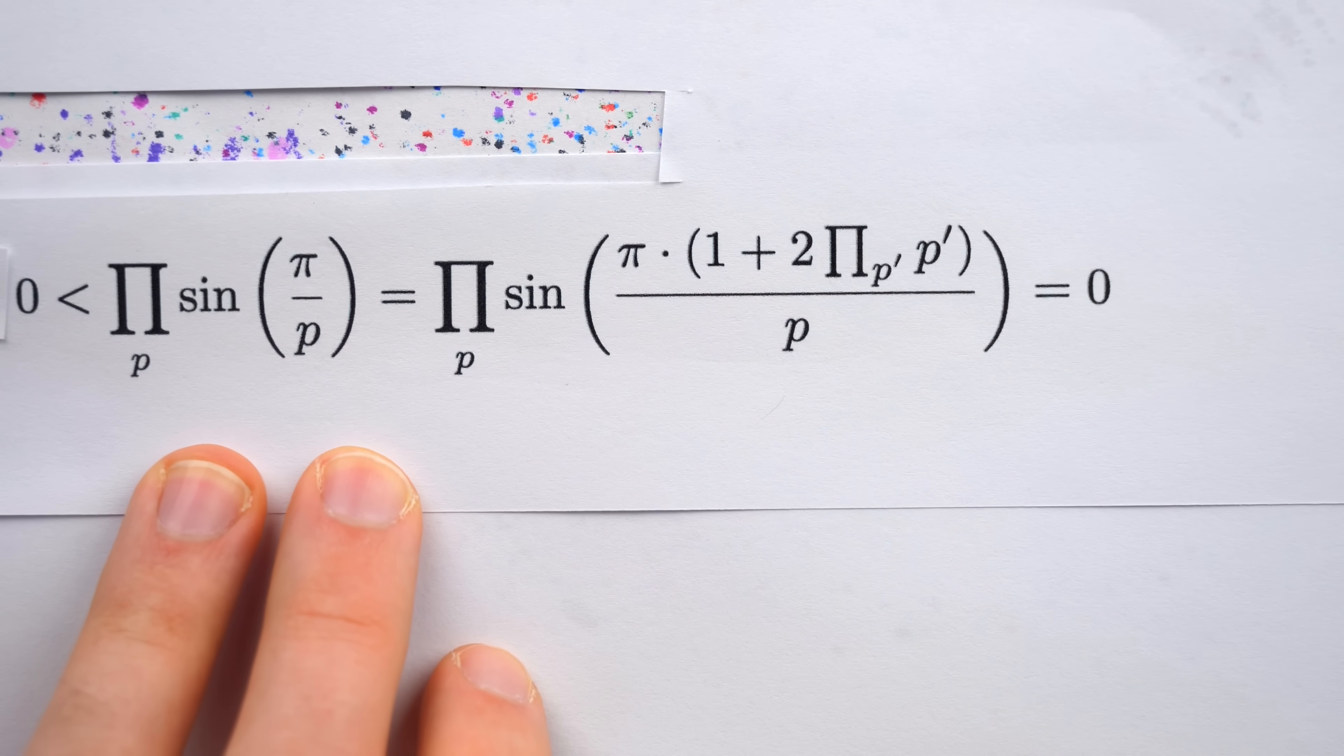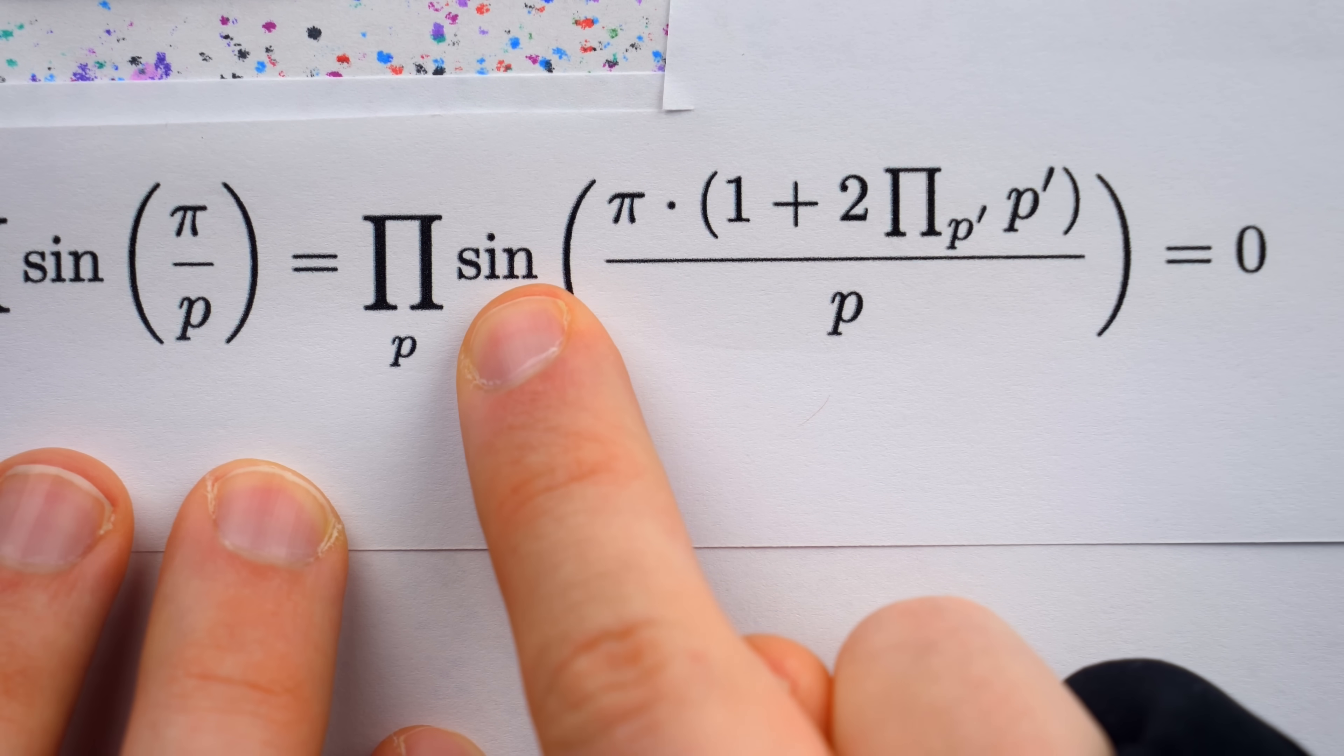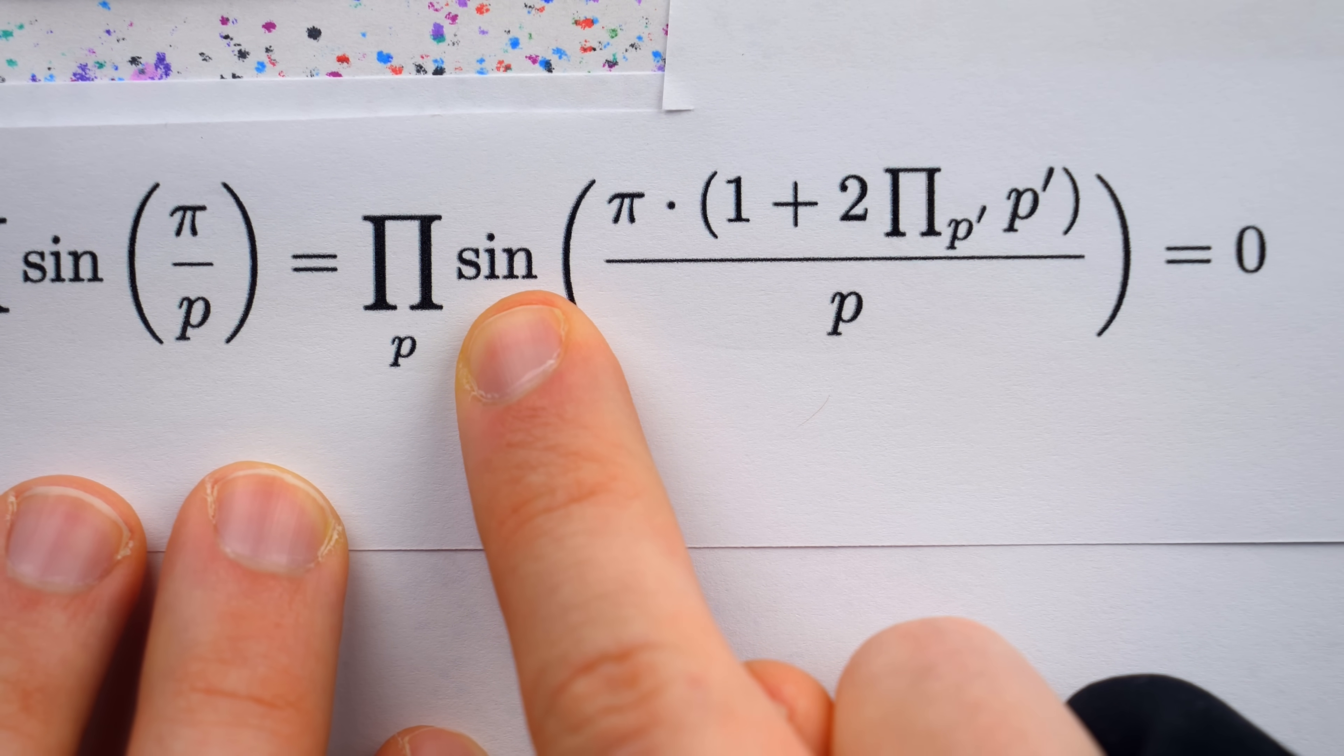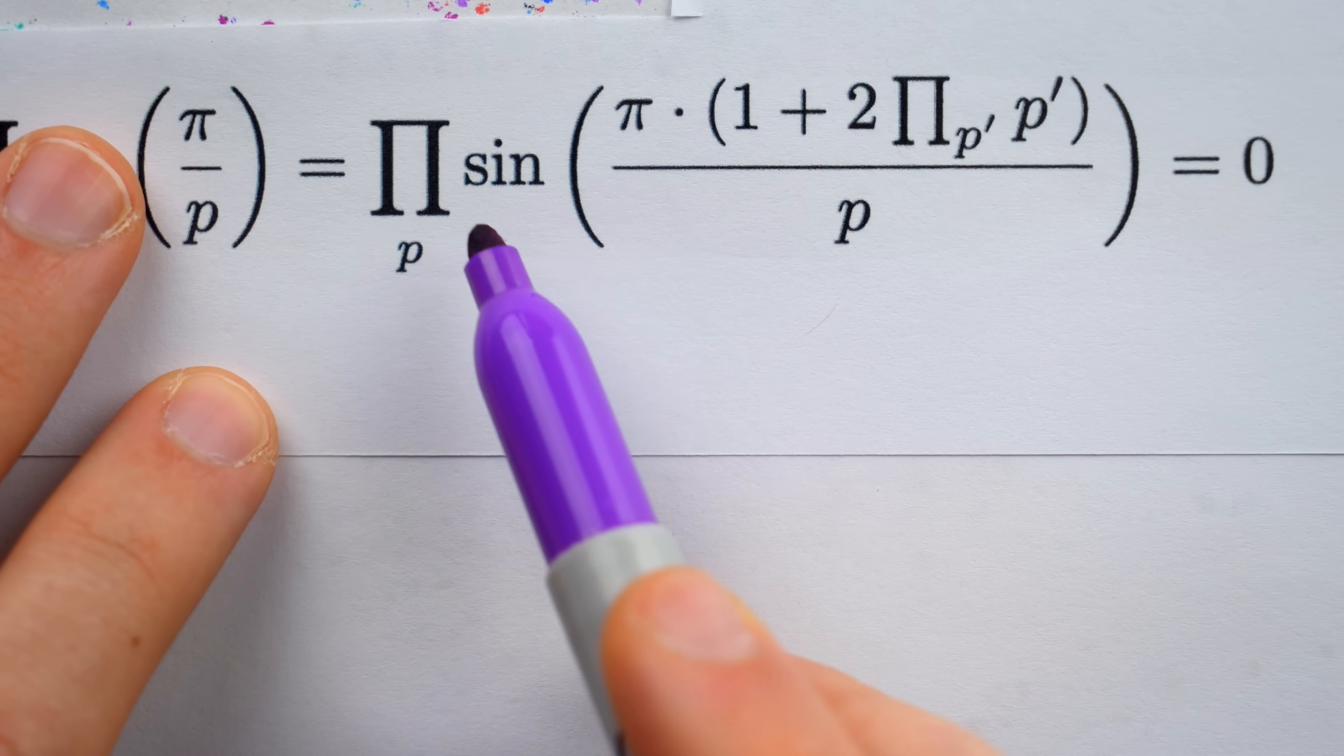And we know that this expression has to equal zero, because it's just a product of a bunch of sine values, and we know at least one of the sine values is zero. And to clarify that point, I'm going to rewrite this expression again.